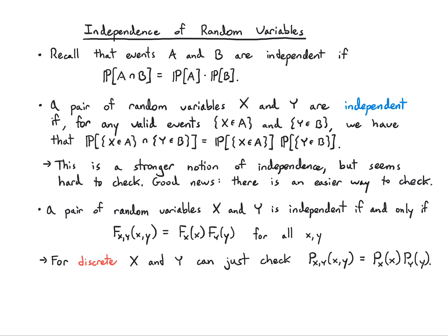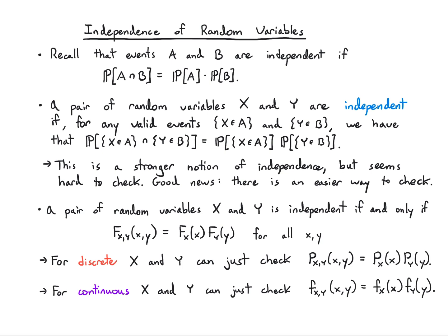For continuous X and Y, it's the same thing — I just check if the joint PDF factors: f(X,Y) = f(X) × f(Y). So I don't even have to worry about the joint CDF factoring; I can just check the PMF for discrete or the PDF for continuous.